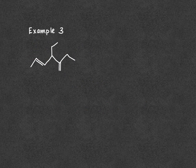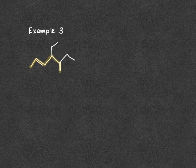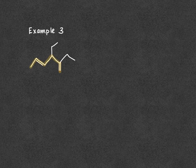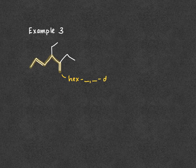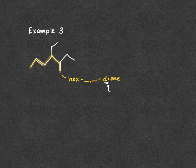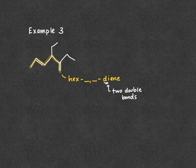Now for one final example, following the same steps. First, find our parent chain, highlighted in yellow — it must contain our double bonds. In this case we have two double bonds, so the parent chain is the longest chain containing both of them. That parent chain is 6 carbons long, giving us hex-. Because there are two double bonds, we'll have two number locations followed by the term diene — just as we'd use di- for two methyl or two ethyl groups.